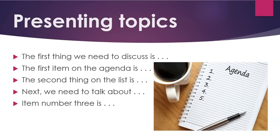You see a sample agenda on the right. The next step is to present the topics on the agenda. 'The first thing we need to discuss is...' 'The first item on the agenda is...' Then you can go through the list: 'The second thing on the list is...' 'Next, we need to talk about...' 'Item number three is...'